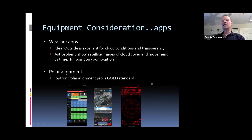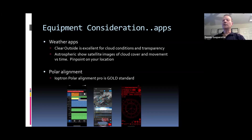Polar Scope Align Pro by iOptron supports pretty well any mount. It's about six or seven dollars now but well worth it. It has databases, gives you coordinates, and really helps if you have a polar alignment scope on your tripod or star tracker to dial in your polar alignment. Once you have good polar alignment, you'll have good tracking and much better images.